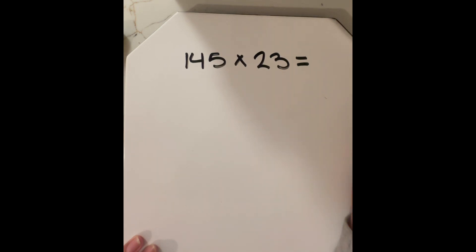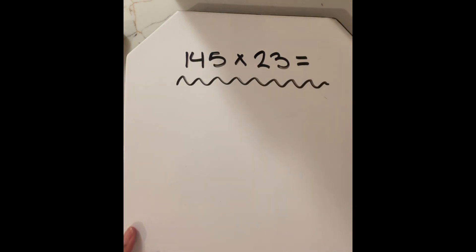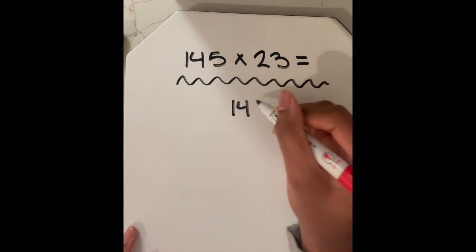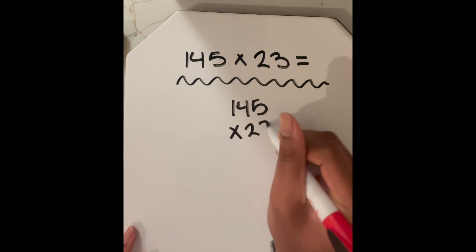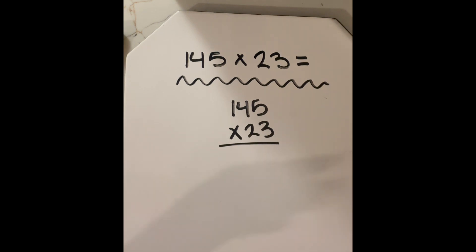Another way to solve this by working it out with pen and paper is by writing it in a vertical form, where we have 145 over or times 23 like this. So from here, we can go on and now evaluate.